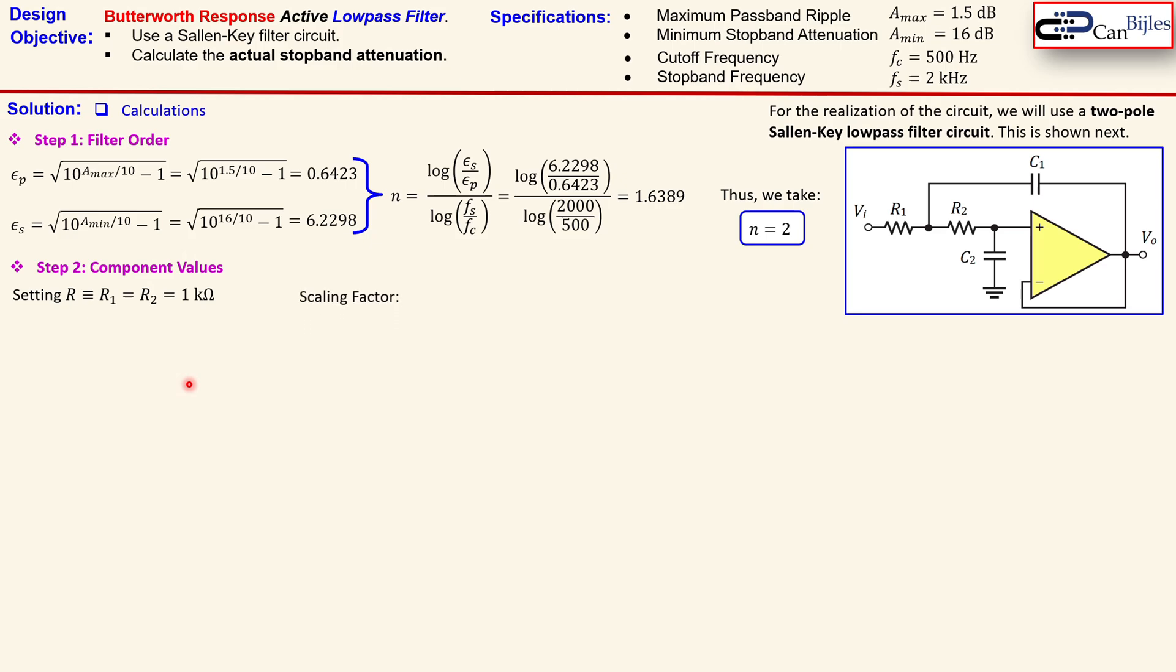Then we need to calculate what's called the scaling factor. So that is called now C which is not the capacitor necessarily but just the scaling. That is given by 1 over R times omega_c and omega_c here is of course 2π times f_c. Now when you do that we have then 1 over.